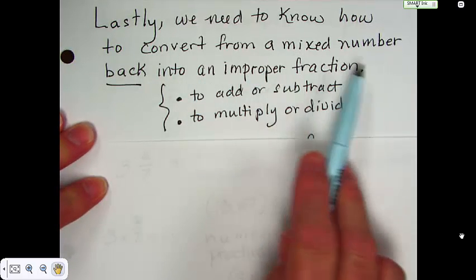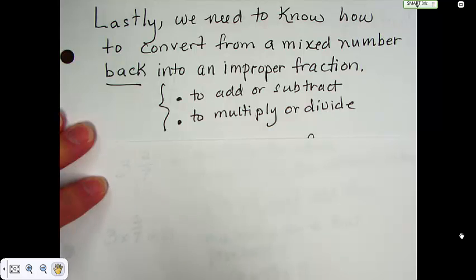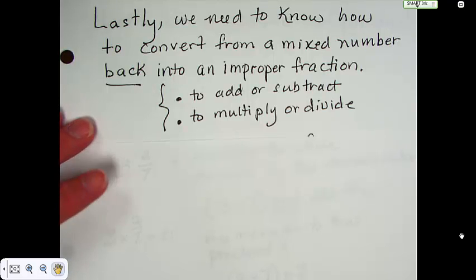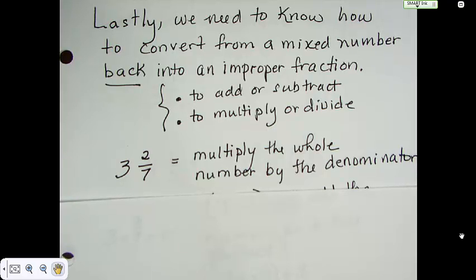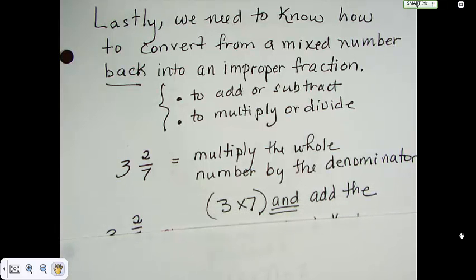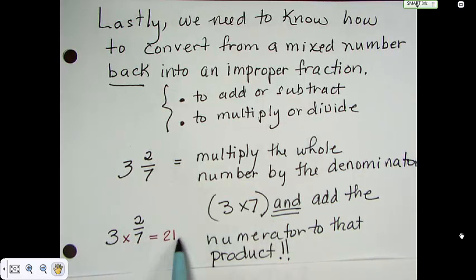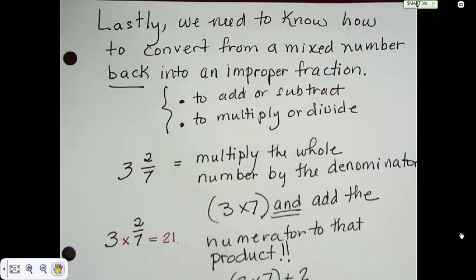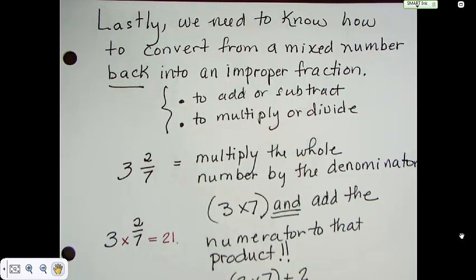Lastly, we need to know how to convert from a mixed number back into an improper fraction. So now we're going from a mixed number and we're going to turn it into an improper fraction, which is just the opposite of what we were just doing. We often use this to add or subtract or multiply or divide. So, here we go. To change 3 and 2 sevenths into improper, we will multiply the whole number by the denominator, 3 times 7. And then we will add the numerator to that product. So, 3 times 7 is 21. Then we're going to add that 2 on. And we end up with 23. 3 times 7 plus 2. 3 times 7 plus 2. Finally, put this new sum over the original denominator and you get 23 over 7.